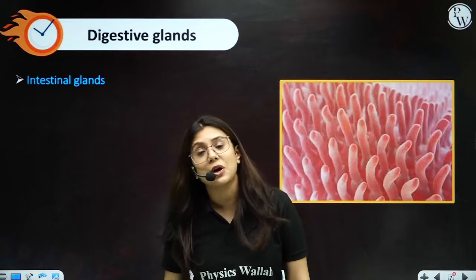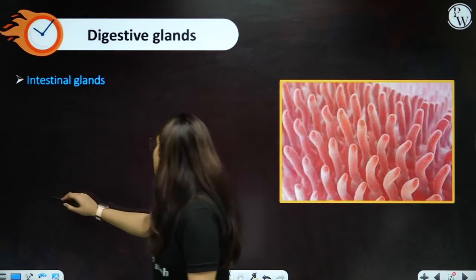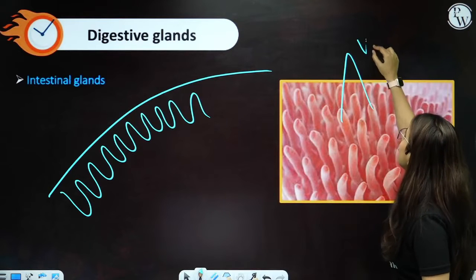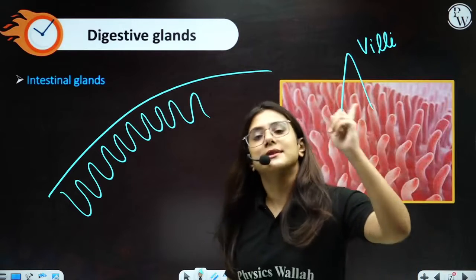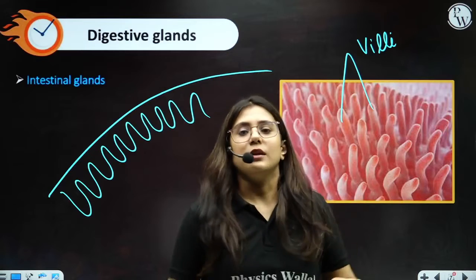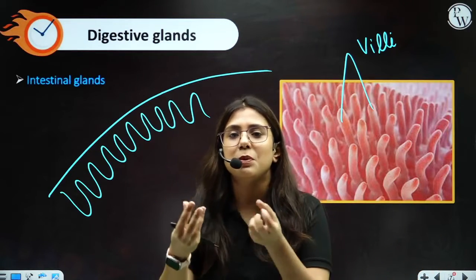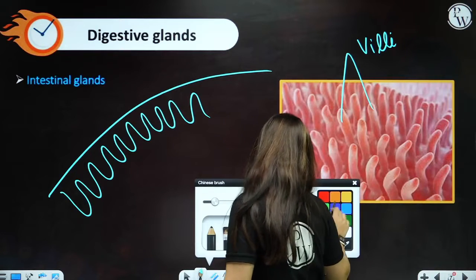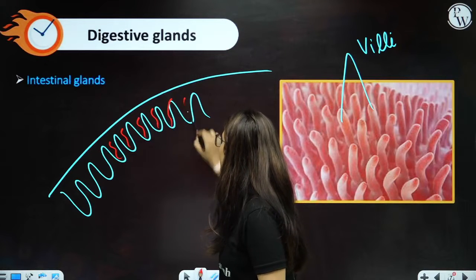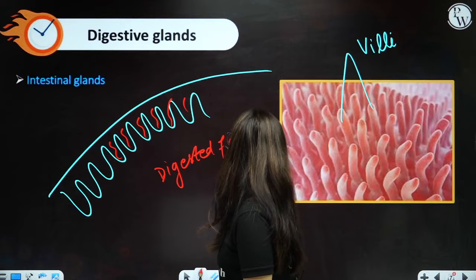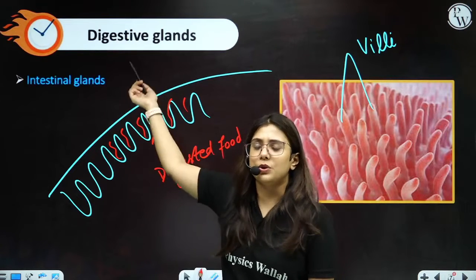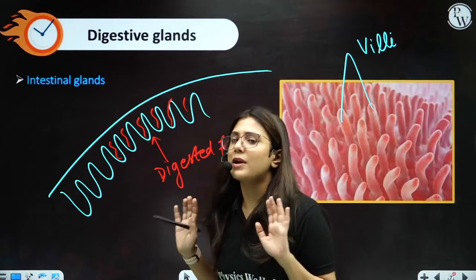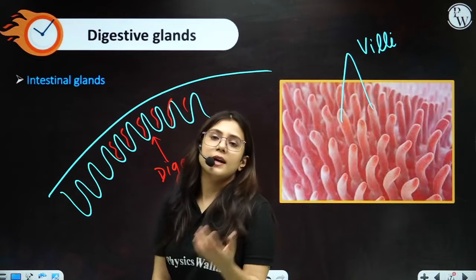Let's move to another point — intestinal glands. Our small intestine also has glands. If you look inside the wall of the small intestine, it has these finger-like projections, known as villi. Small intestine is digesting the food and also helping in the absorption of digested food. The food is digested inside the small intestine into simple particles. It has to enter inside the bloodstream — that will happen with the help of villi. These villi are richly supplied with blood vessels. The digested simple food will enter the villi and reach into the bloodstream, and blood will transport it to different cells of the body.